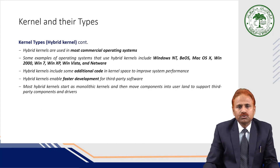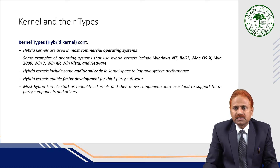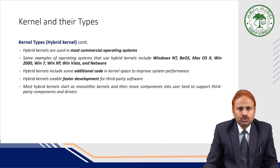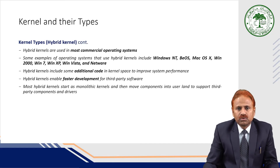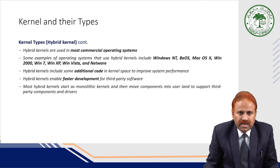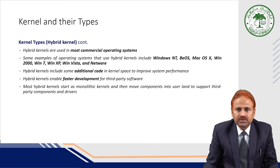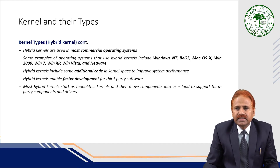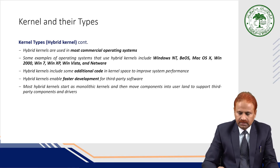Hybrid kernels are used in most commercial operating systems. Examples include Windows NT, Mac OS X, Windows 2000, Windows 7, Windows XP, Windows Vista, and NetWare. Hybrid kernels include some additional code in kernel space to improve system performance and enable faster development for third-party software. Most hybrid kernels start as monolithic kernels and then move components into user land to support third-party components and drivers.